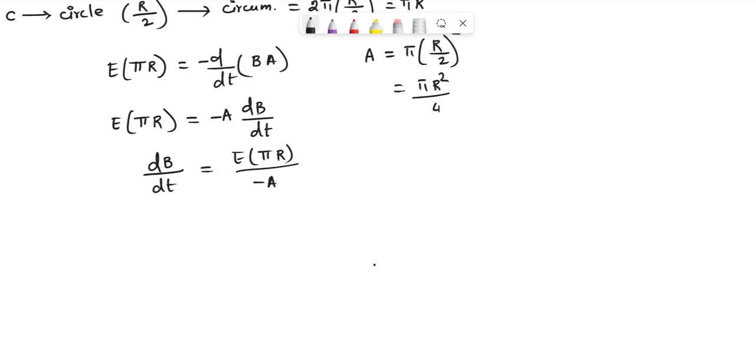Substituting for the area, we get E times pi r over minus pi r square over 4. Cancelling pi and r in the numerator and denominator, we get minus 4E over r.